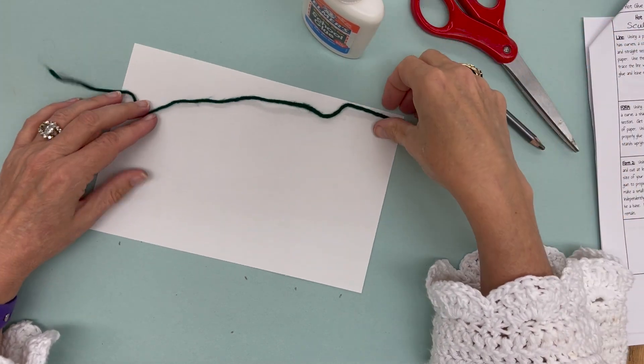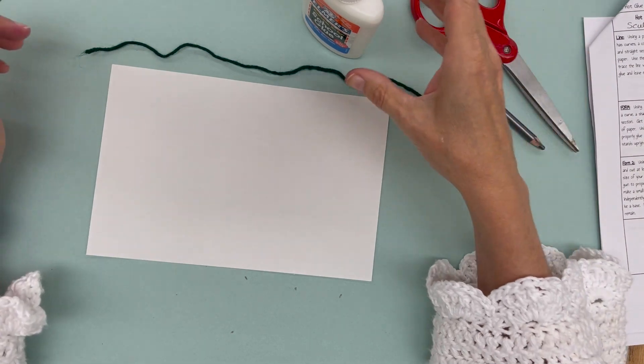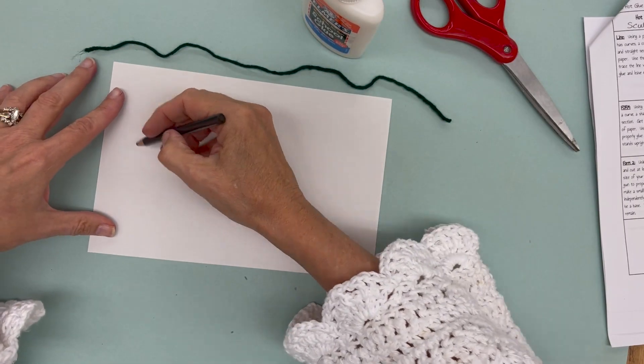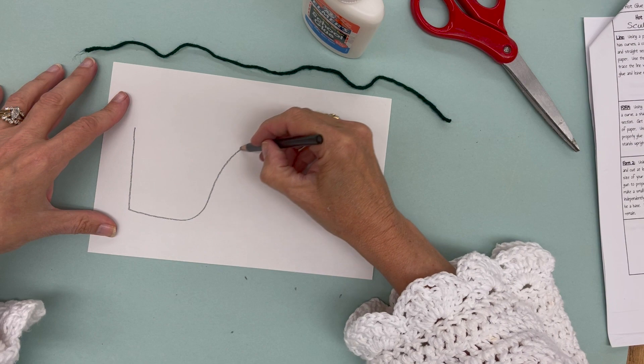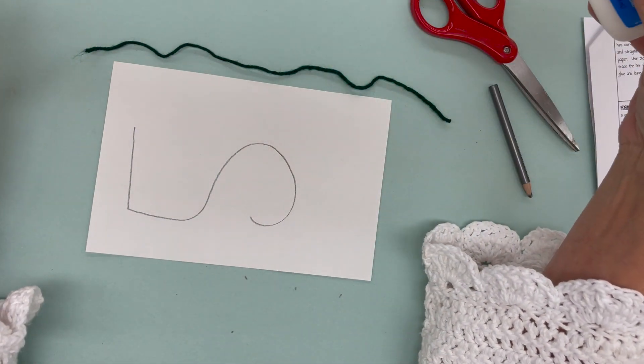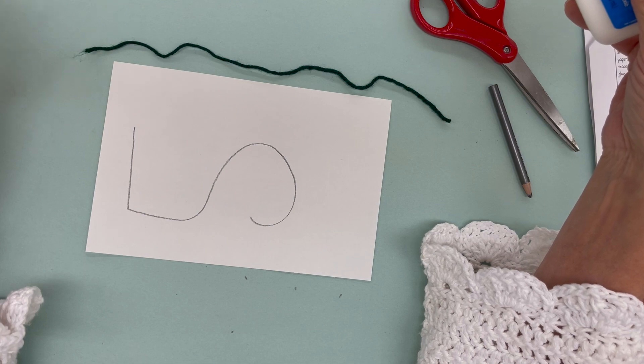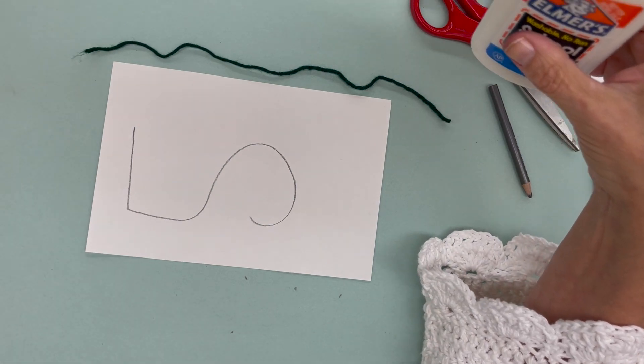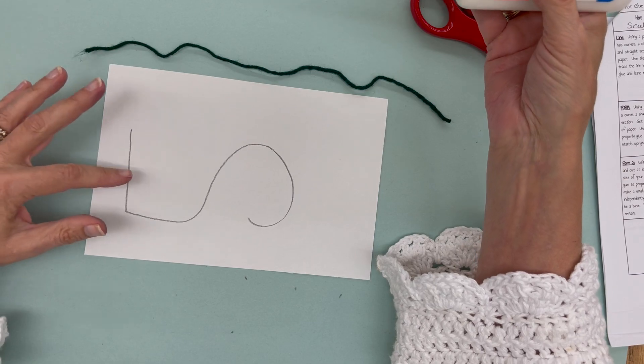What you're going to do is if you want, you can draw a line. Not a really big one because you don't have that much yarn.